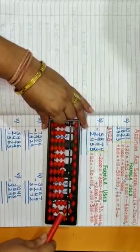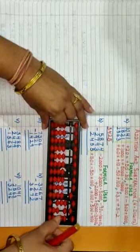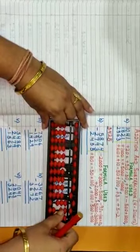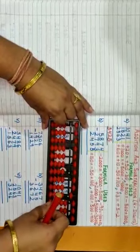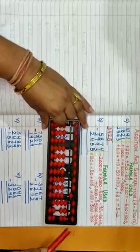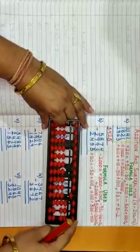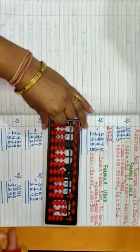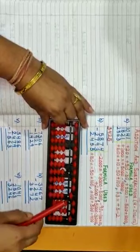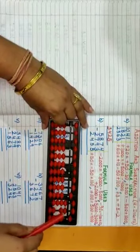For 60, beads are not sufficient. So plus 60 is equal to plus 10 minus 50 plus 100. Then plus 3, beads are not there, so plus 5 minus 2. So we get the answer 5425. Similarly,